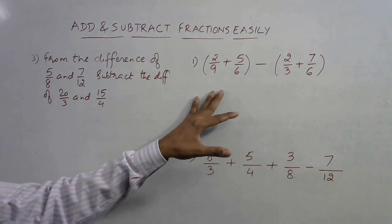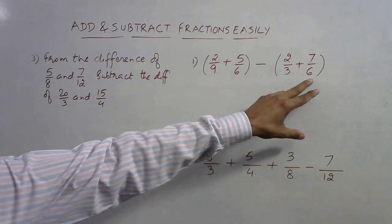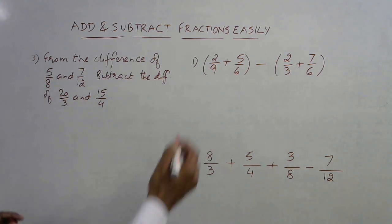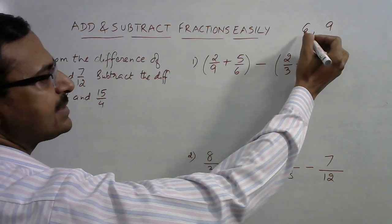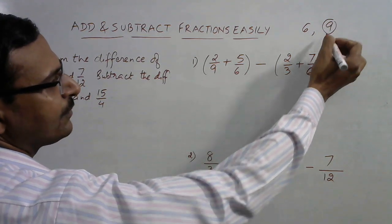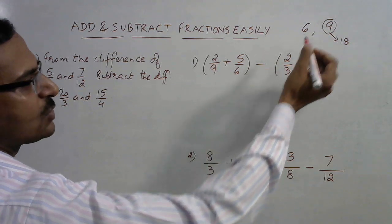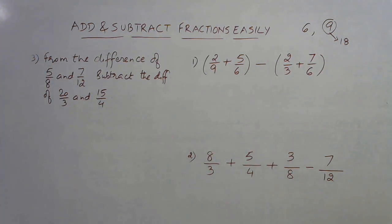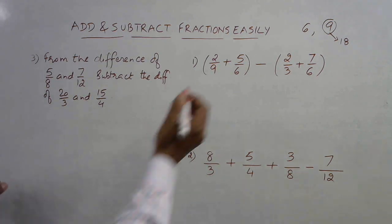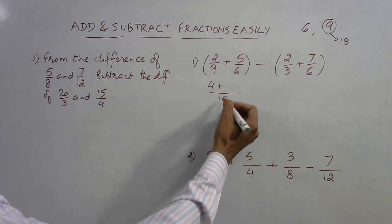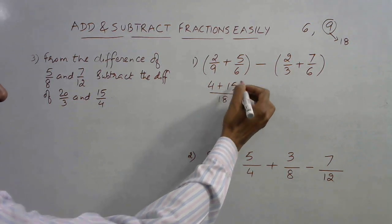Now let's apply this to a problem. We have two pairs of rational numbers in brackets and need to subtract the results. The denominators are 9 and 6. How do we find the LCM of 9 and 6 quickly? 6 does not divide 9 evenly, so take multiples of 9: the next is 18. Since 18 is exactly divisible by 6, the LCM of 9 and 6 is 18. Then 18÷9=2, and 2×2=4; 18÷6=3, and 3×5=15.